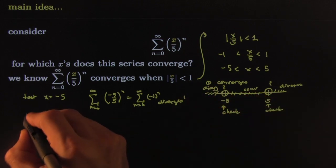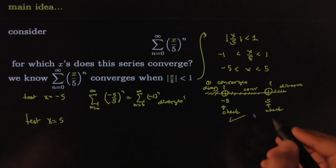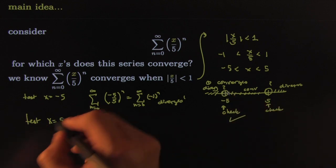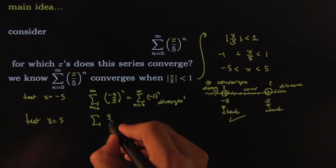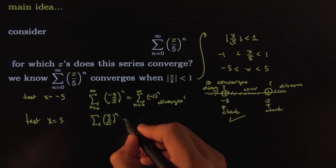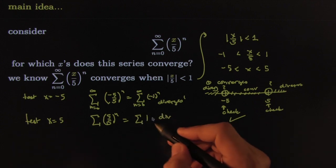Now we'd like to test the other endpoint, x equals five. We plug it into your x here—that would give us five over five raised to the n. Simplify it a little bit: sum of all the ones. Clearly diverges by the divergence test.